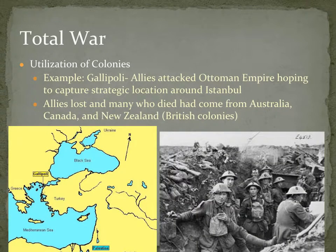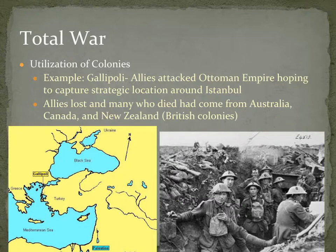At the famous Battle of Gallipoli, the Allies attacked the Ottoman Empire, hoping to capture Istanbul — a very strategic location. The Allies lost, and a lot of the soldiers who fought on behalf of the British came from their overseas colonies: places like Australia, Canada, and New Zealand. With total war, Europeans used their colonial people as soldiers and also took resources from their colonies to help in their war efforts.